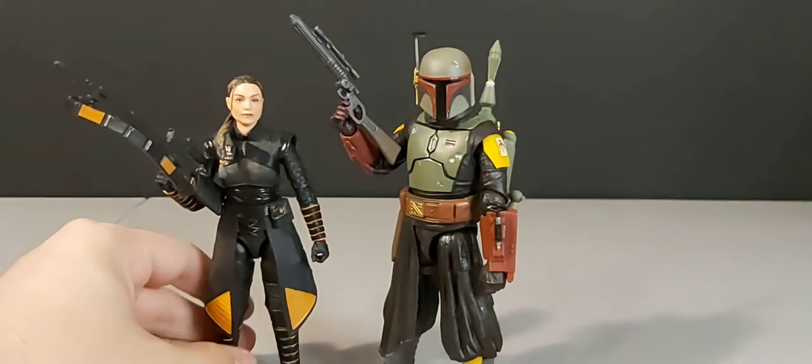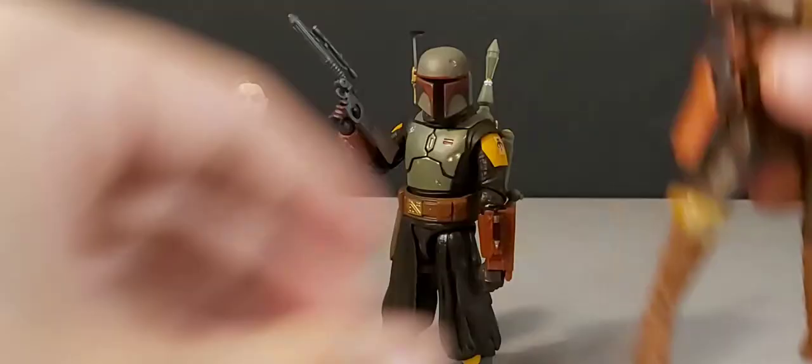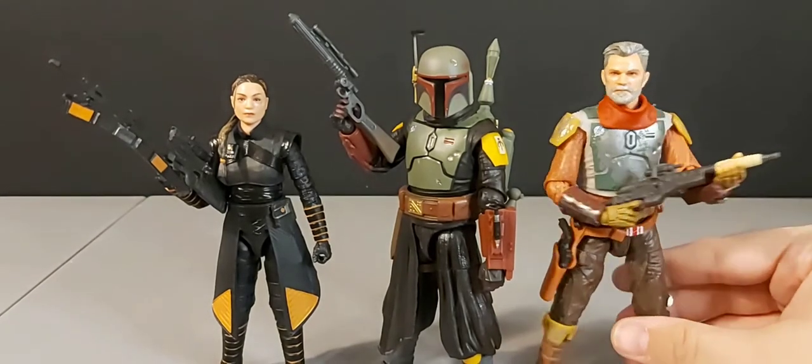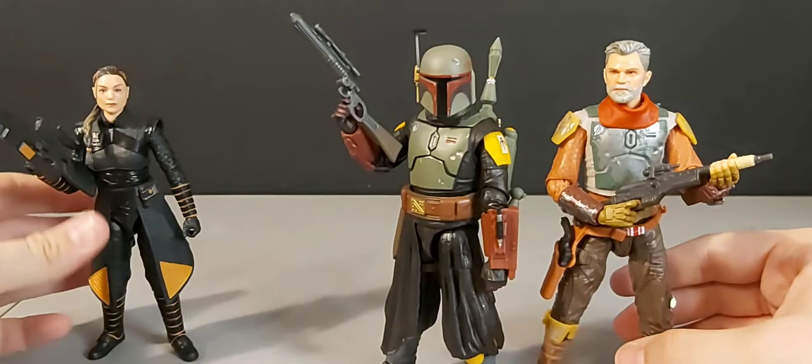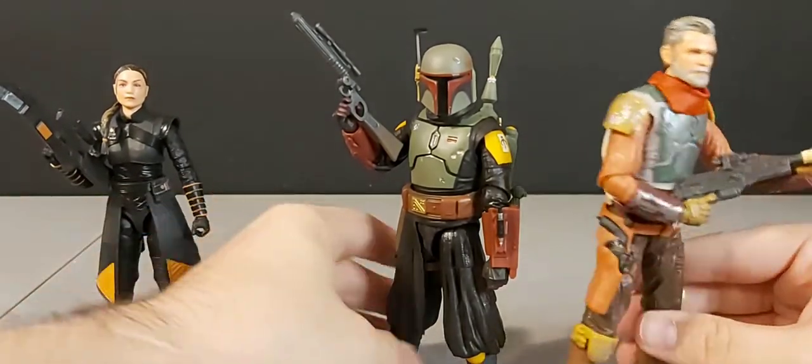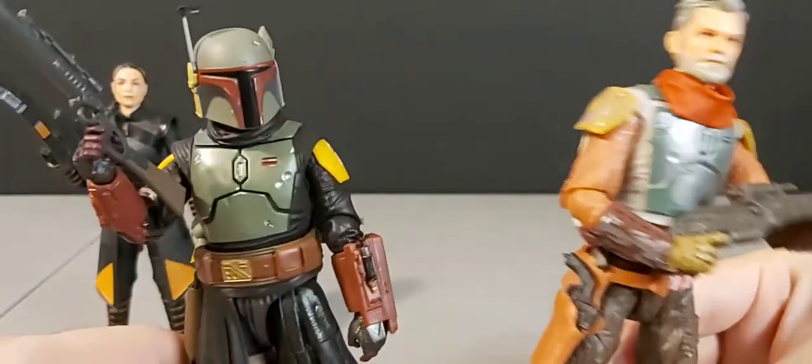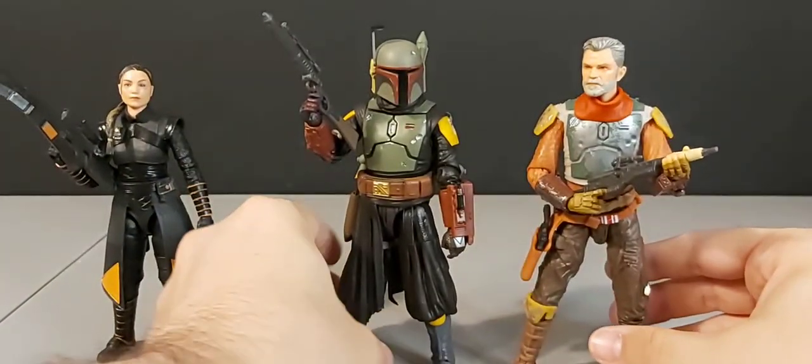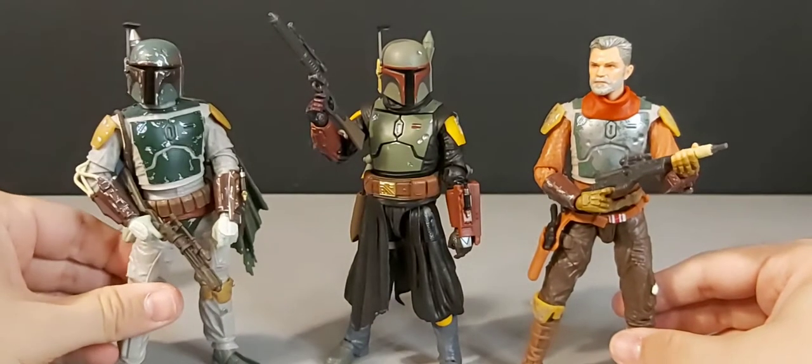But there's Boba Fett. Let's bring in some figures here to compare them to. We got Fennec. And we have Cobb Vanth here. As you can see, the armor difference on the Boba and the Cobb Vanth.